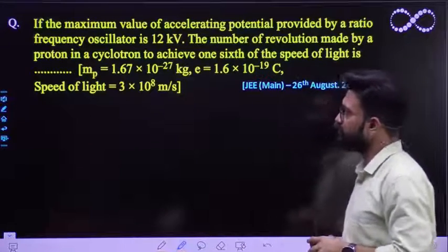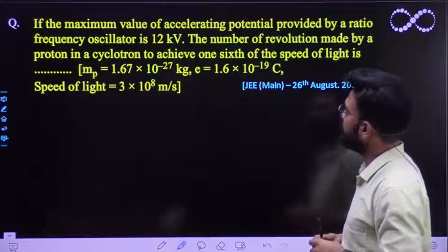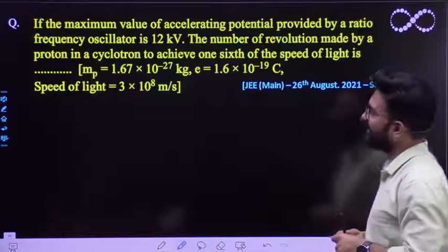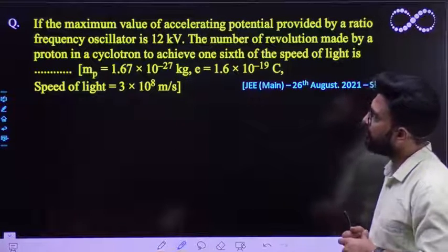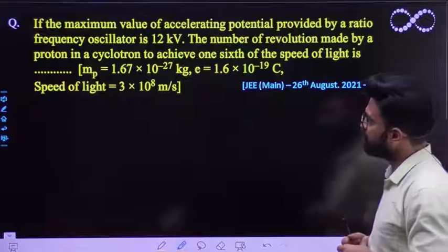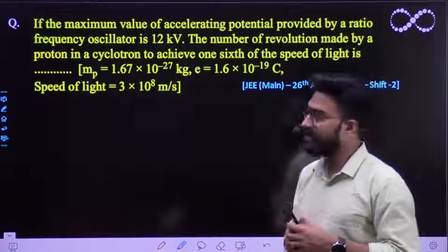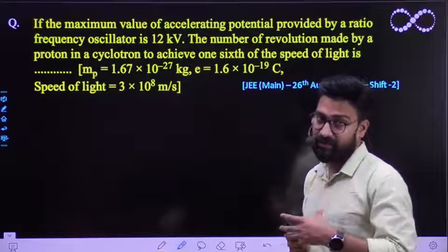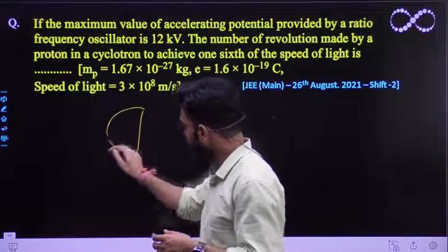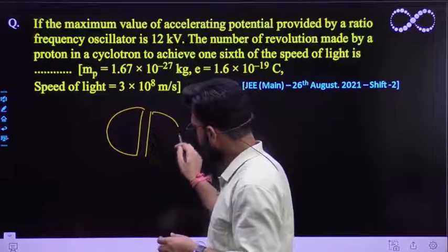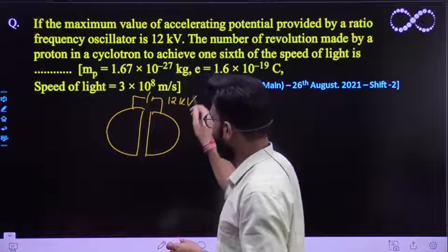So let us see this question first. The question says if the maximum value of the accelerating potential provided by a radio frequency oscillator is 12 kilovolt, that means we have taken a cyclotron. Cyclotron we already know has two Ds. Cyclotron is having two Ds and they have been given a potential of 12 kilovolt.